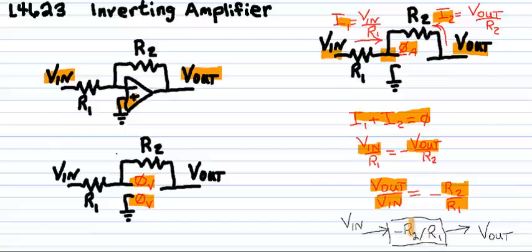Whatever voltage we put in gets multiplied by the gain of negative R two over R one to create the voltage out. And that is the inverting amplifier implemented with an op amp.